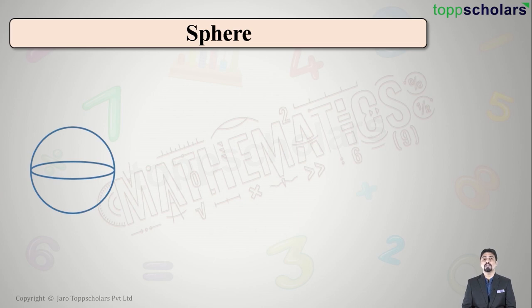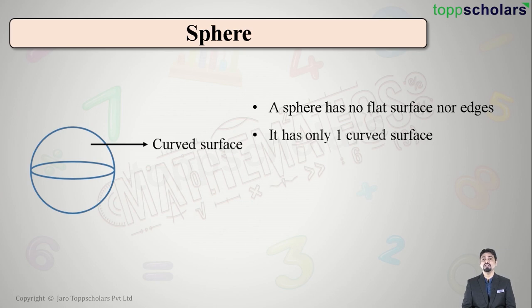Let us now look at the last solid in this video. That is a sphere. What is a sphere or what are some of the examples of sphere in your life? Football, a cricket ball, a marble, all are examples of sphere. A sphere has no flat surface. A sphere also does not have any edge because it has only got one single entire curved surface. Right students? It is brilliant.